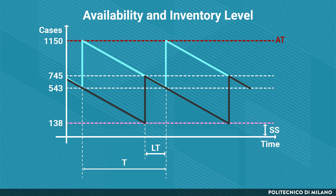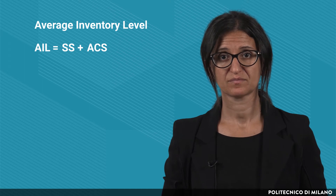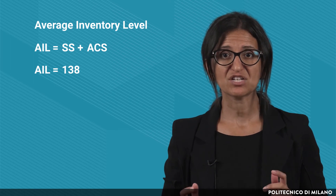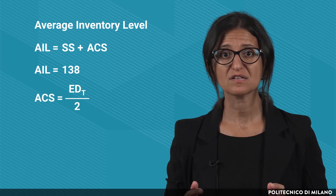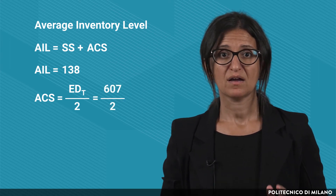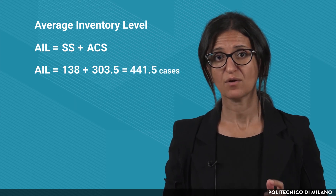The minimum and maximum values of both the availability and the inventory level are indicated in the graph. Considering the time interval t equal to 6 days and the lead time equal to 4 days, we obtain the pattern over time of these two variables. Now we also need to compute the average inventory level. We have to sum up the value of the safety stocks and the average value of the cycle stocks, found as half the expected demand during t — so 607 divided by 2, equal to 303.5 cases — resulting in 441.5 cases.